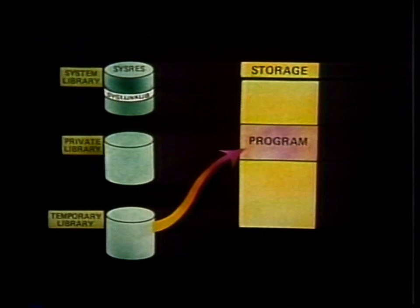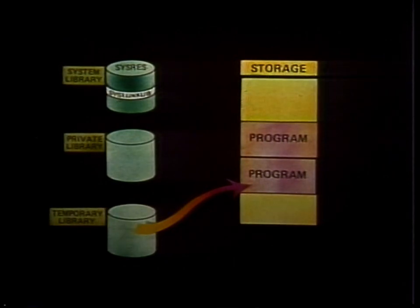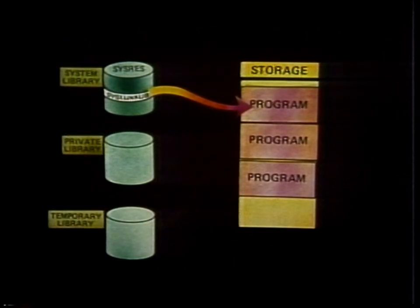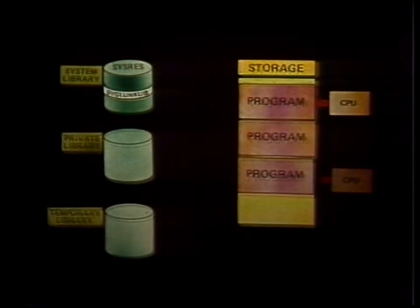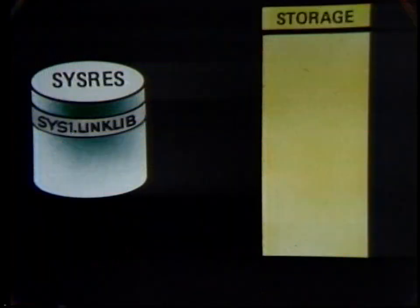In a multiprogramming operating system, many programs can occupy storage simultaneously. Control of the CPU, however, can be in only one program at a time. With many programs in storage competing for CPU time, someone has to decide who gets control of the CPU next. That someone is a part of the control program called the supervisor. The switching of control from one program to another always occurs as the result of an interruption. Since the supervisor cannot predict when an interruption will take place, a part of it must always be resident to handle the interruption when it occurs. That part of the supervisor which must always be resident is called the nucleus.